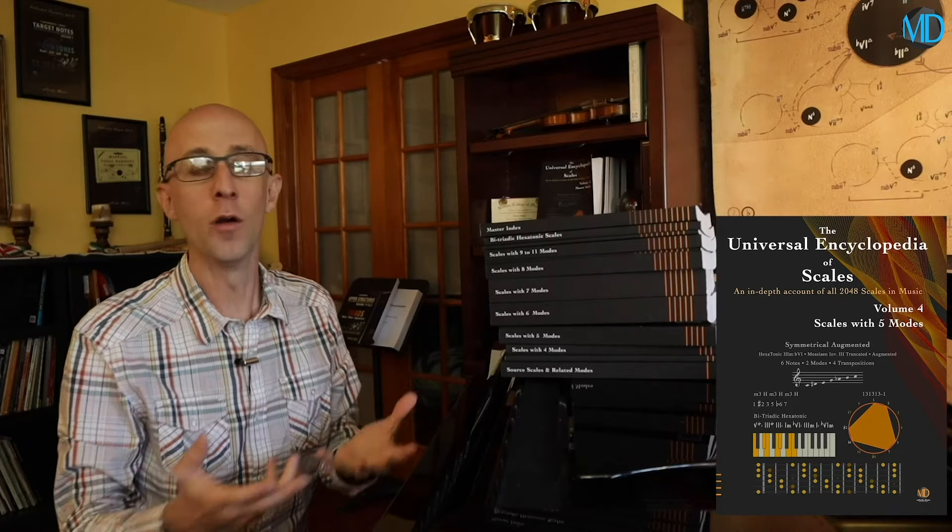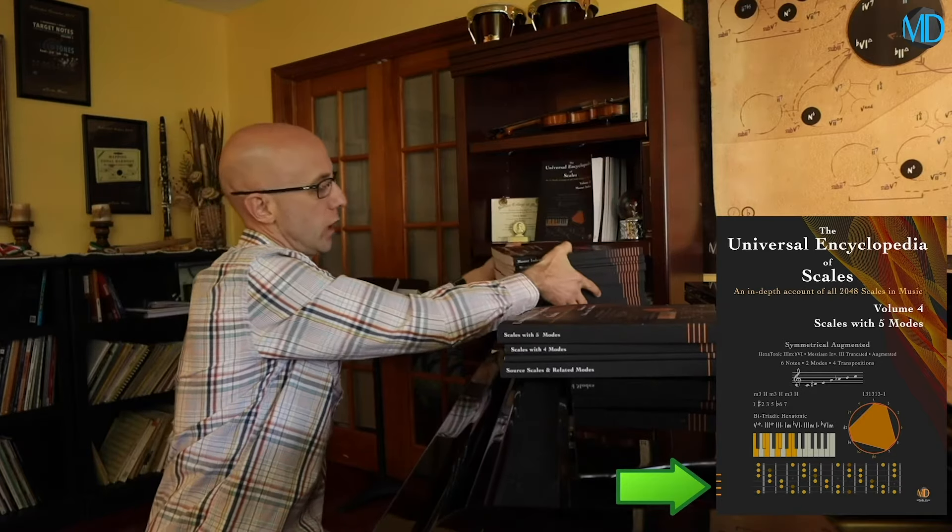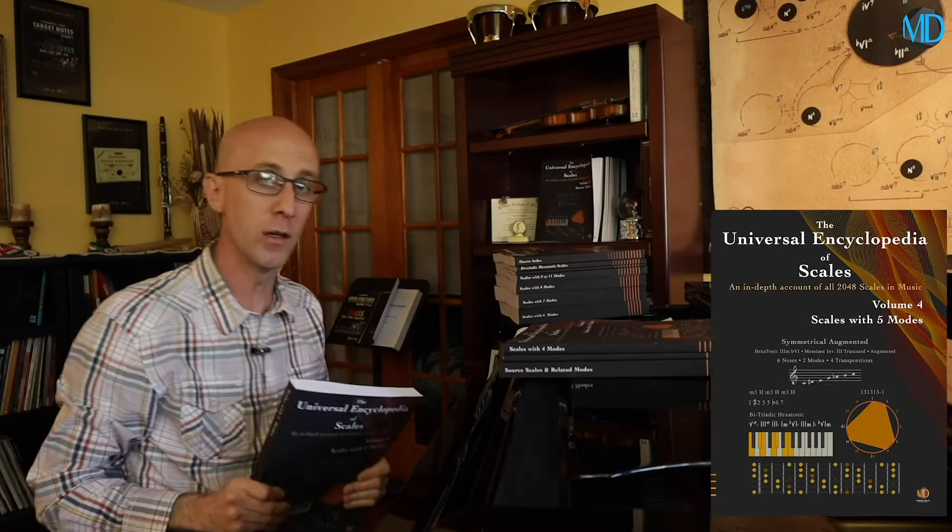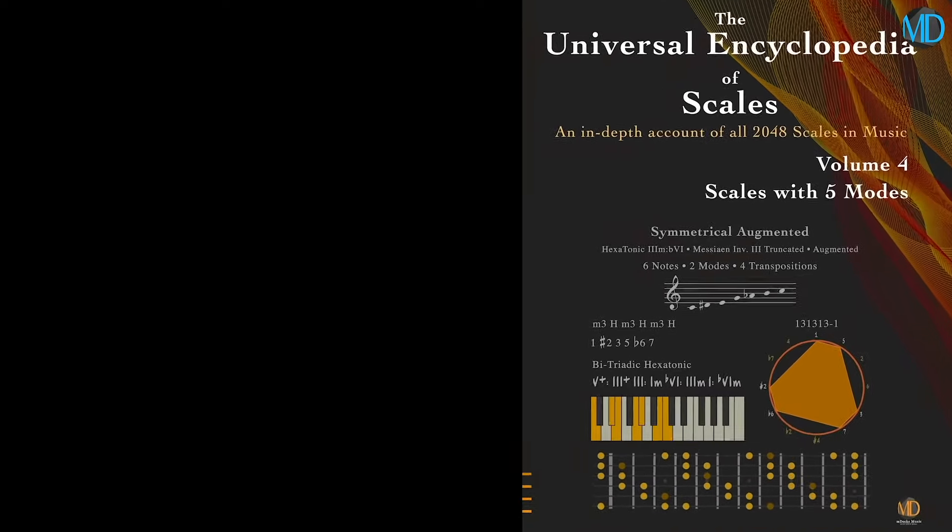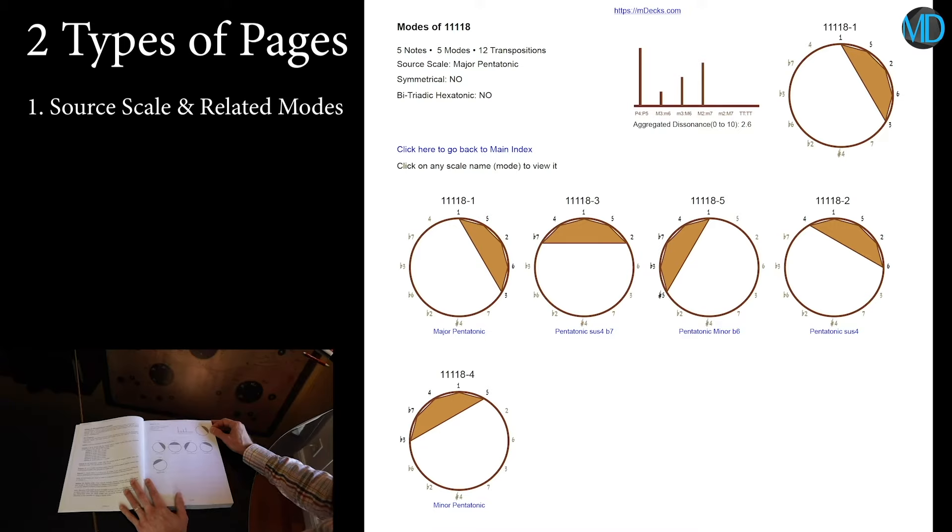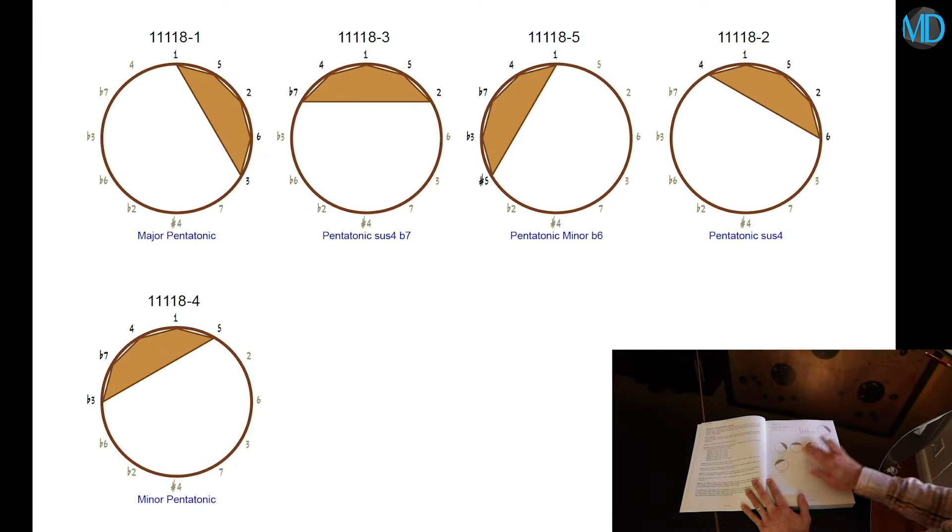Let's grab volume 4 first. You can see the volume indicated on the spine by way of these orange stripes right here. This volume contains all of the scales with 5 modes. Let's go to the first scale page. Now, in these volumes, you're going to find two types of pages. Let's look at the first type first. This is the source scale and its related modes page.